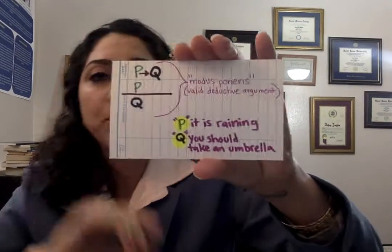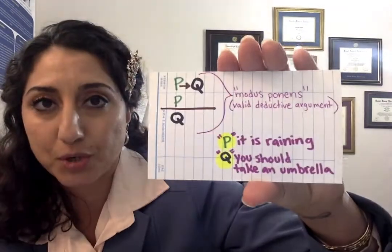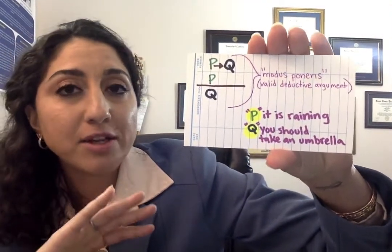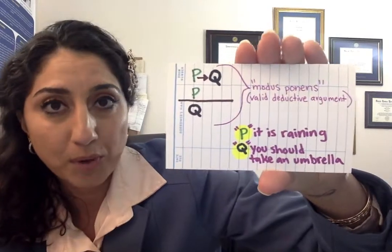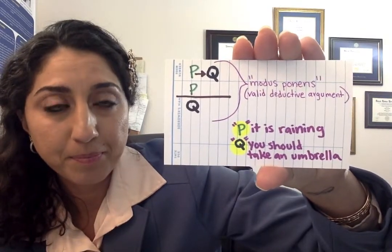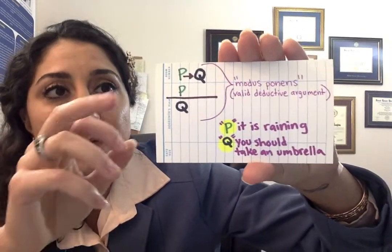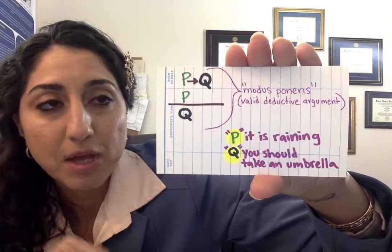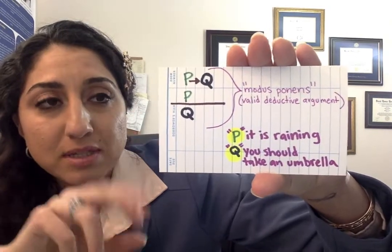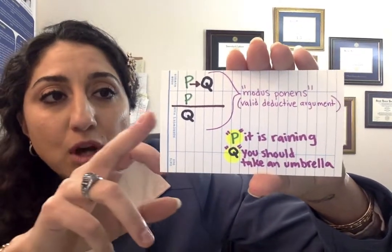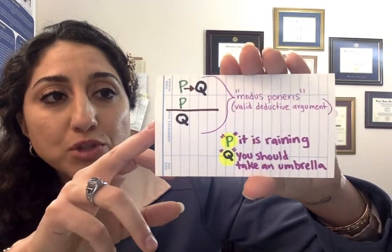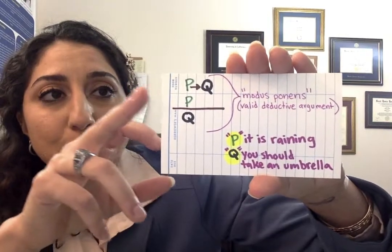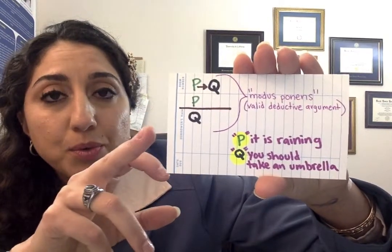Propositions P and Q. You're given an argument — it's a valid argument form. The first premise says 'if P then Q.' The second premise says 'P.' And the logical conclusion, which must be true if the premises are true, is Q.